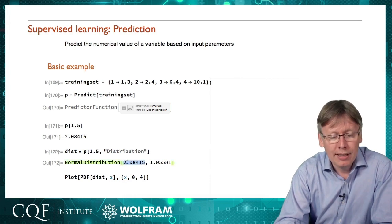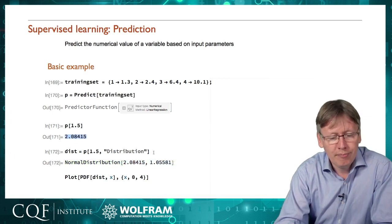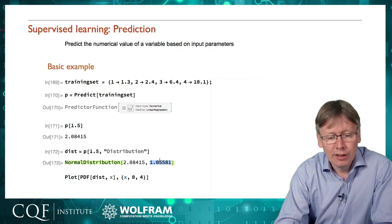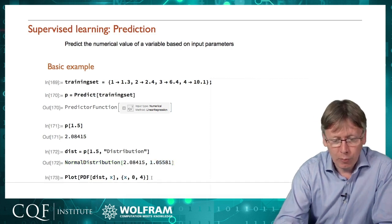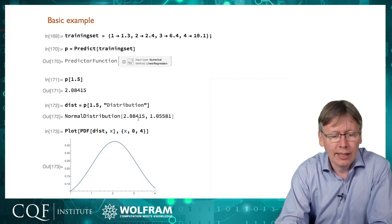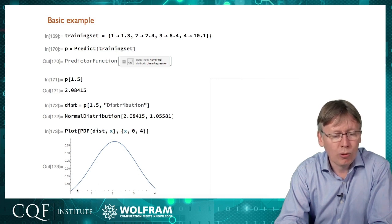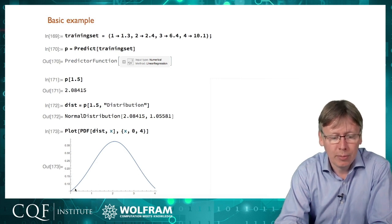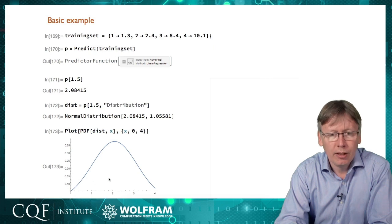A whole range of numbers. In this case, a normal distribution centered on just above 2, which was its best prediction, with a standard deviation of a little bit over 1. If we plot that, we can see exactly the range of possible values. Its best prediction was 2, but there's a reasonable chance it could be anything up to about 4, down to nearly 0, before it becomes an ignorable probability.